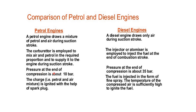Comparing petrol and diesel engines: a petrol engine draws a mixture of petrol and air during the suction stroke, while a diesel engine draws only air. A carburetor mixes air and petrol in the required proportion for the petrol engine; an injector or atomizer injects fuel at the end of the compression stroke in the diesel engine. The pressure at the end of compression is about 10 bar for petrol engines and about 35 bar for diesel engines. In the petrol engine, the charge is ignited with a spark plug; in the diesel engine, fuel is injected as a fine spray and ignited by the high temperature of compressed air.